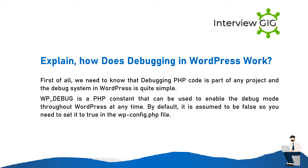Explain how debugging in WordPress works. Debugging PHP code is part of any project, and the debug system in WordPress is quite simple. WP_DEBUG is a PHP constant that can be used to enable debug mode throughout WordPress at any time. By default it is set to false, so you need to set it to true in the wp-config.php file.